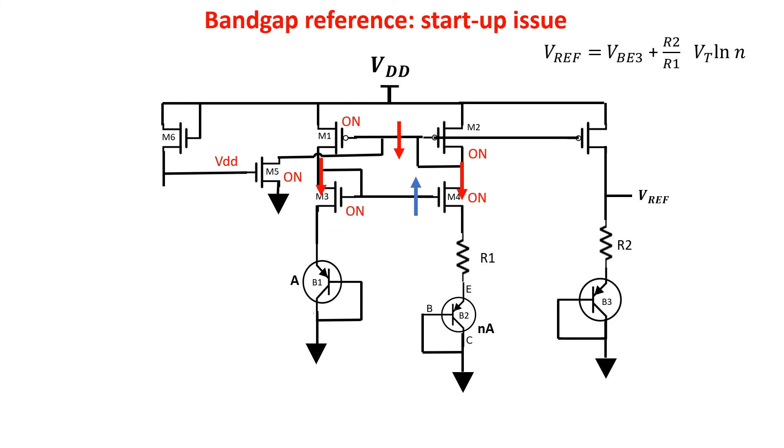When we reach the proper operation point, we want to detach M5, so we add M7 MOSFET which is a large MOSFET, so a small resistance. You see at the proper operation point the gates of the NMOS M3 and M4 are at high voltage, turning on M7 which pulls down the gate of M5, taking it almost to zero, thus turning off M5 and detaching it from the bandgap circuit.